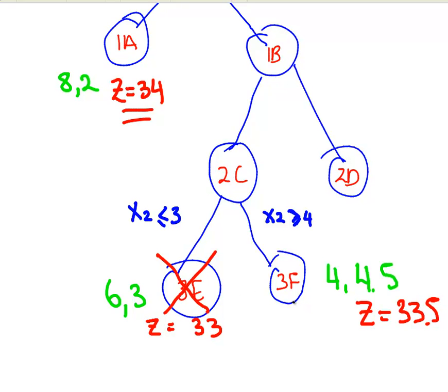Now, looking at 3F here, the solution there is 4 and 4.5. You might think, alright, we will just branch further on, keep branching on 4, have it less than or equal to 4, greater than or equal to 4. No point.